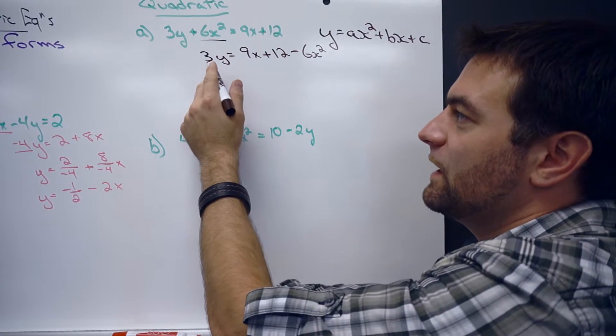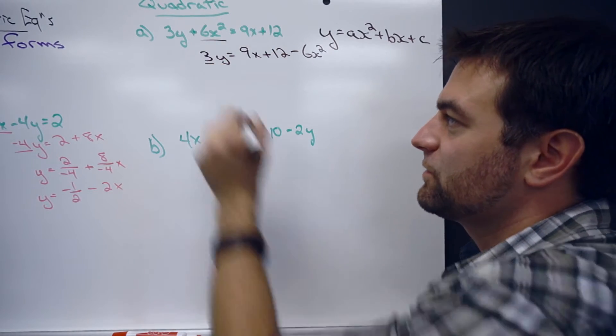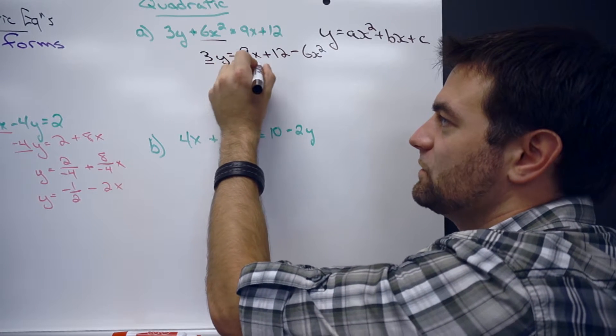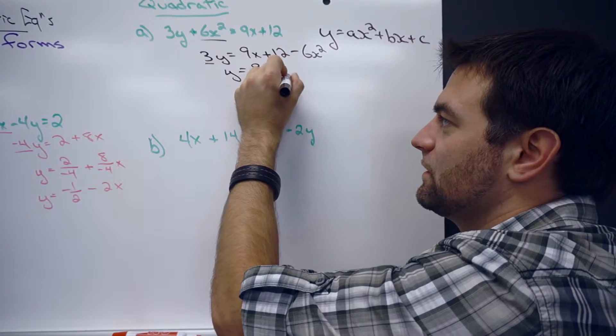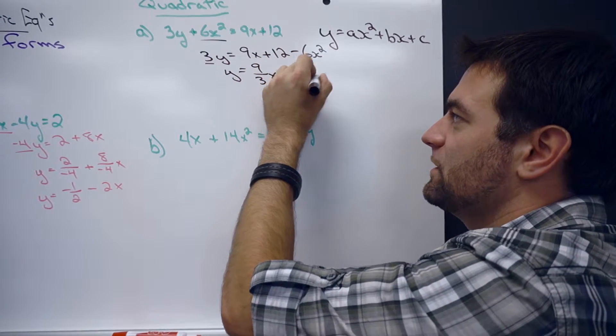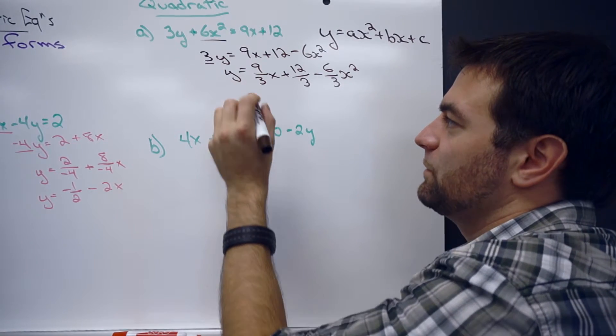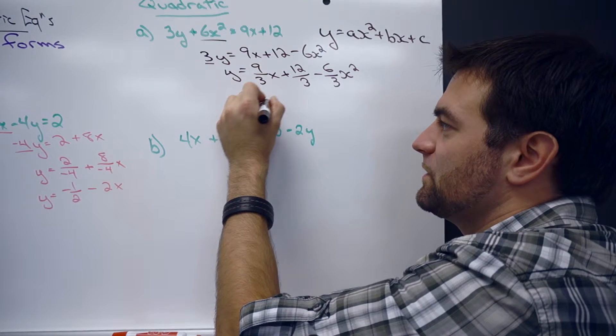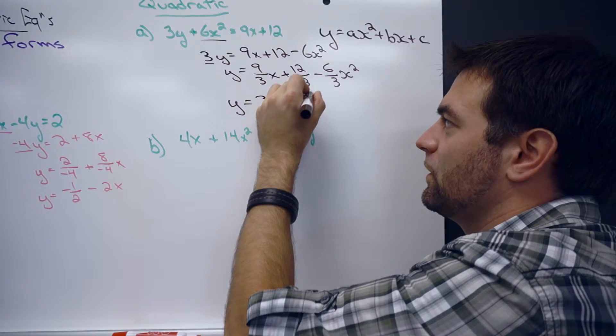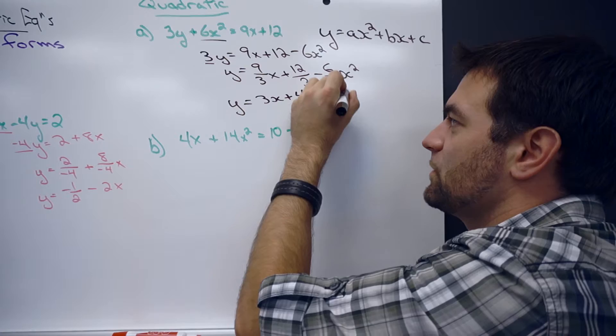And then everything needs to get divided by that 3. So, y equals 9 over 3x plus 12 over 3 minus 6 over 3x squared. And we end up with y equals 3x plus 4 minus 2x squared.